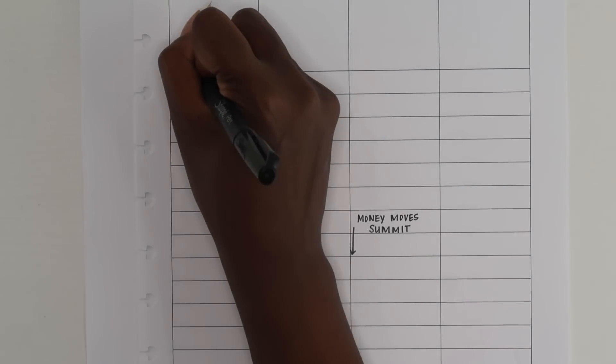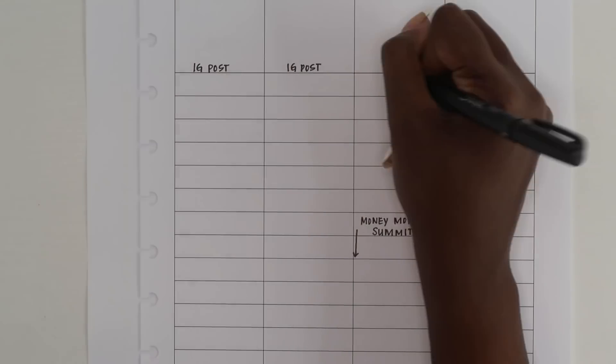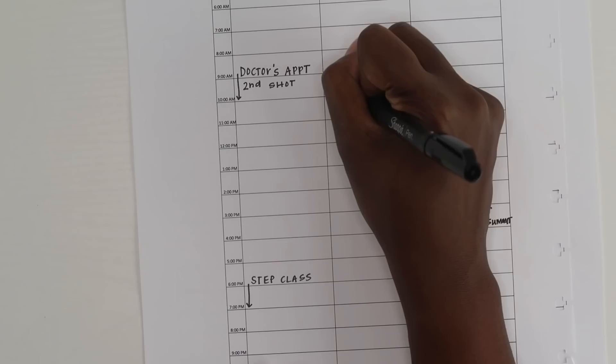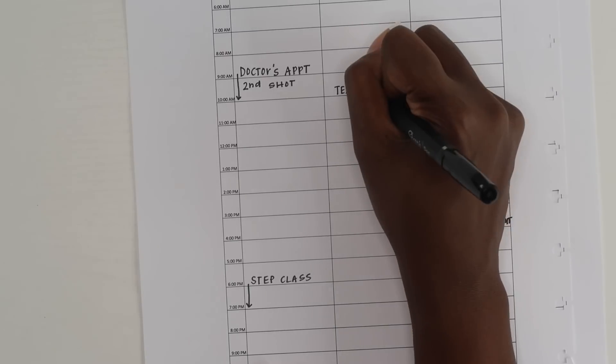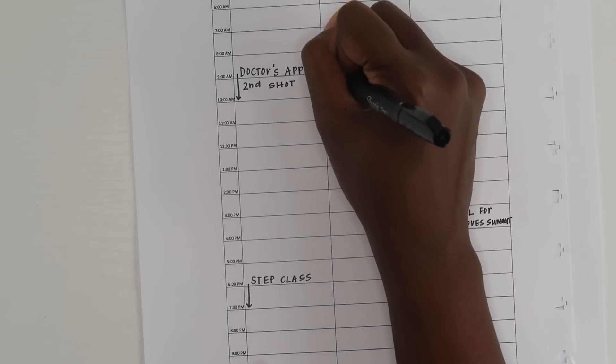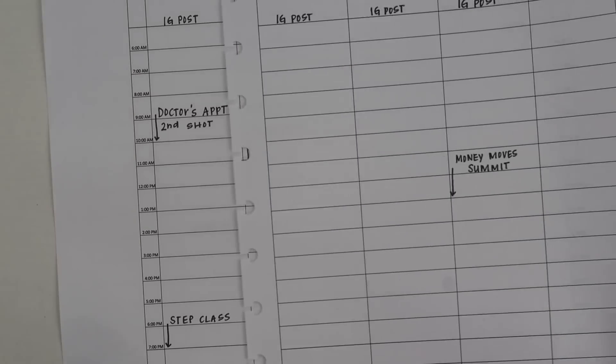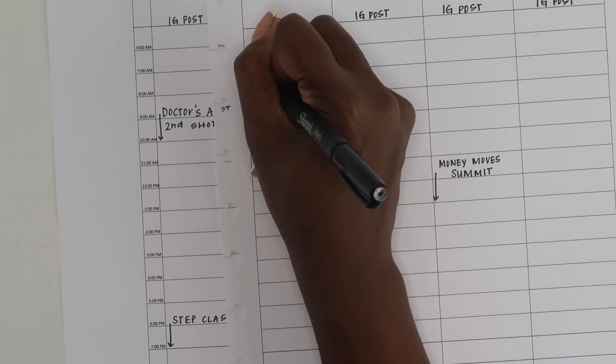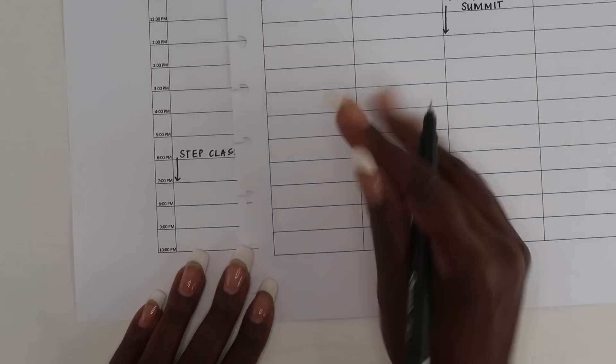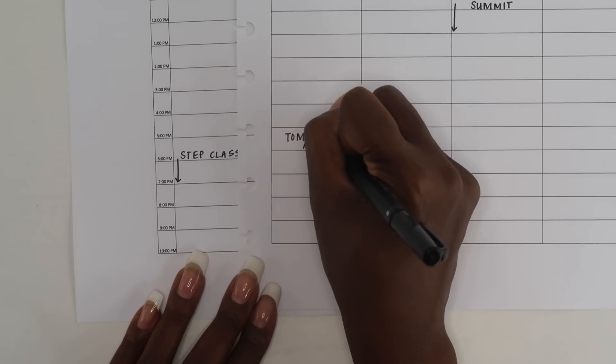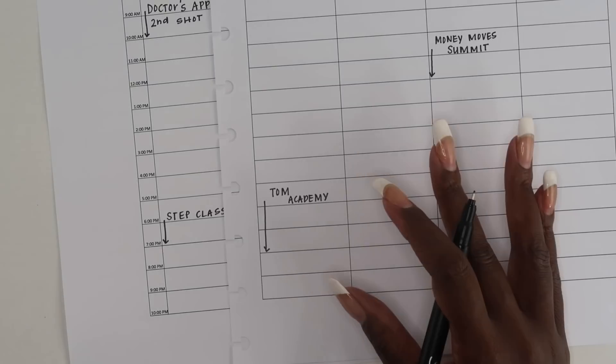What I decided to start doing instead is to write in all of my plans first and then use small functional stickers to decorate afterwards. It has really made a major difference because now I'm able to use my planner the way that I have designed it and actually get things done.